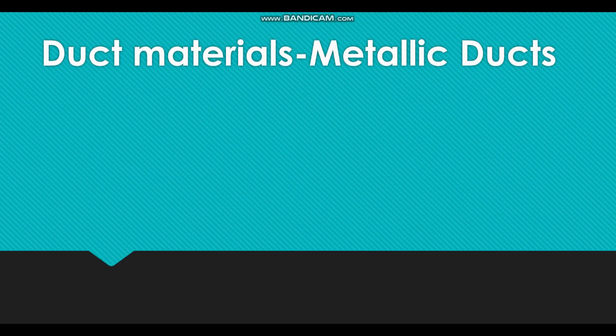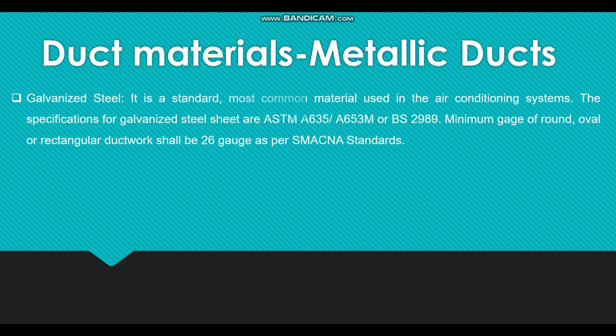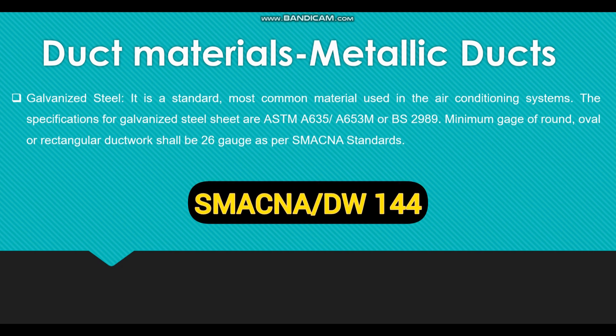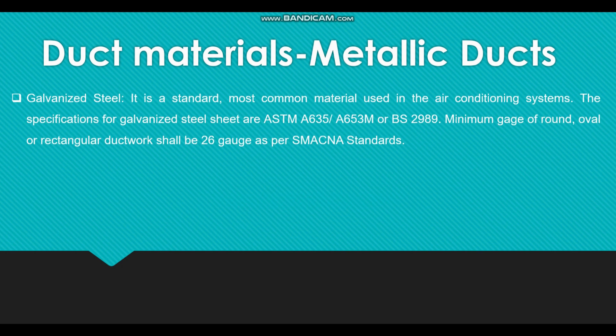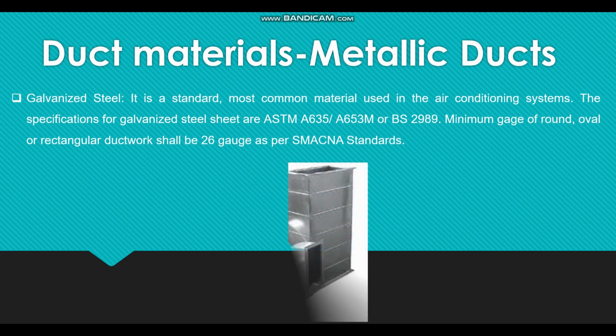Coming to the metallic duct, the first and most important duct material is galvanized steel duct. It is the standard and most common material used in air conditioning systems. The specifications for galvanized steel ducts are ASTM A635 or ASTM A653M. If you go to the British standard, it is BS2989. The minimum gauge of round, oval, or rectangular ductwork shall be 26 gauge as per SMACNA standard. Ductwork is normally fabricated using SMACNA or DW144 standard.